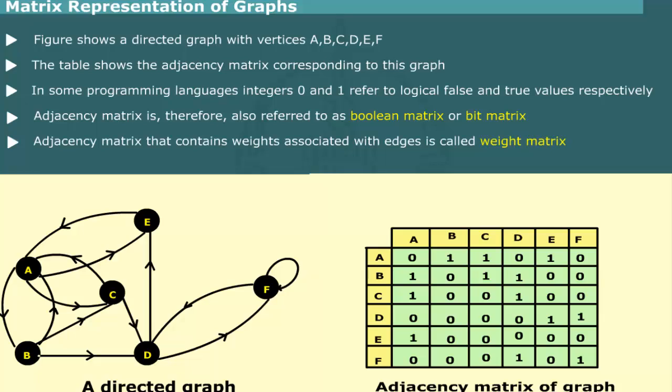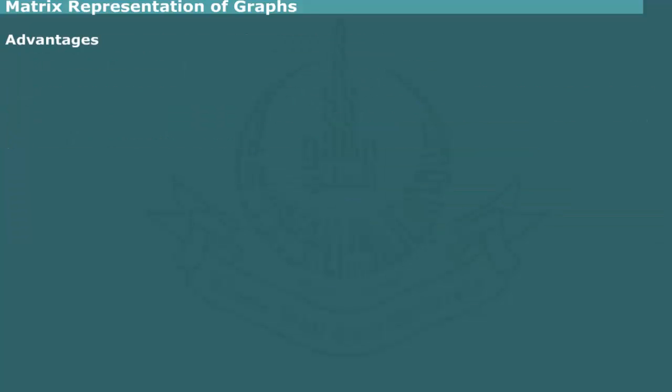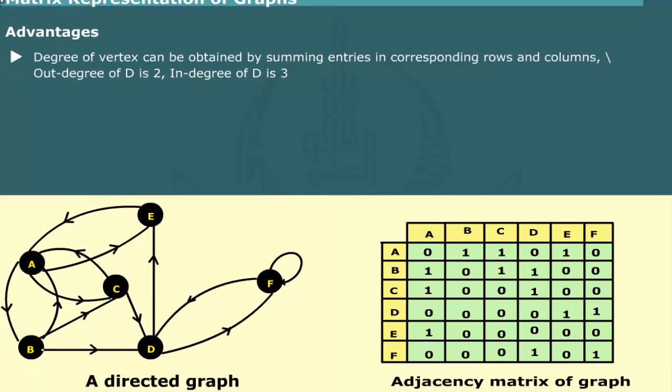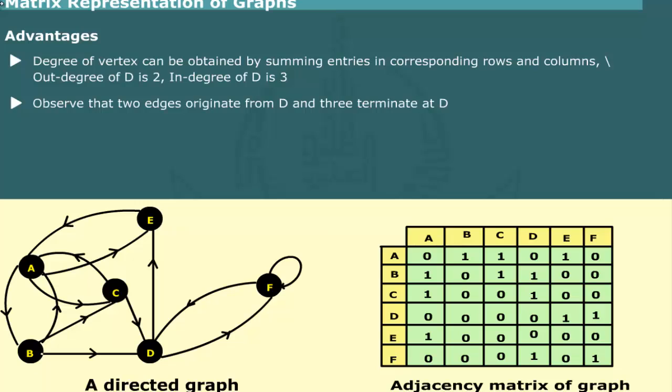An adjacency matrix that contains the weight associated with edges of a weighted graph is called weight matrix. A major advantage of matrix representation is that we can determine the degree of vertex easily by simply summing the entries in the corresponding rows and columns of the adjacency matrix. For example, consider the vertex D. The sum of values in the row corresponding to the vertex is 2. We conclude that out degree of D is 2. Also, the sum of entries in the column corresponding to D is 3. By looking at the pictorial representation in figure, you can verify that 2 edges originate from D and 3 edges terminate at D.